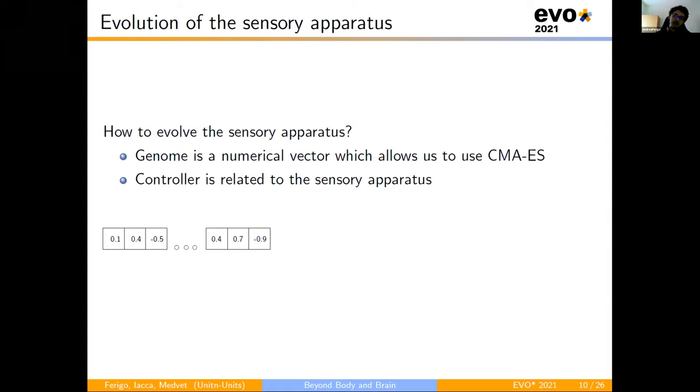The genome, as we saw before, is a numerical vector, the weight vector, and this allows us to use CMA-ES. But the controller is strongly dependent on the sensory apparatus. A change in the number of sensors causes a change in the brain morphology. For this reason, we need a way to move from the numerical vector space to the solution space, and for this reason we use the mapper.